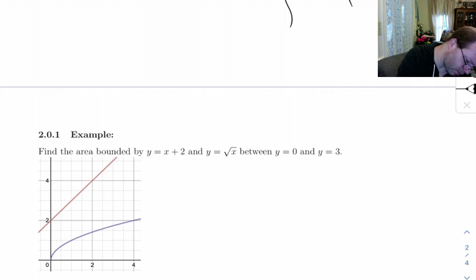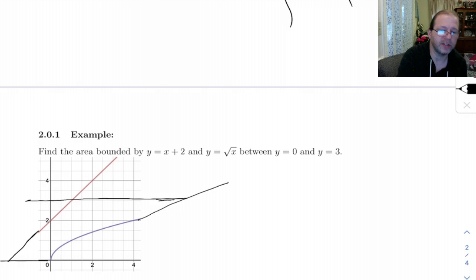Alright, now I actually need to put a little more of this graph on here. So this graph goes back to here. So we're looking between these two graphs and between 0 and 3. So y equals 3 is up here, and this goes further out over here. I didn't have the best graph drawn there. But this is what we're trying to find is this area inside of here.